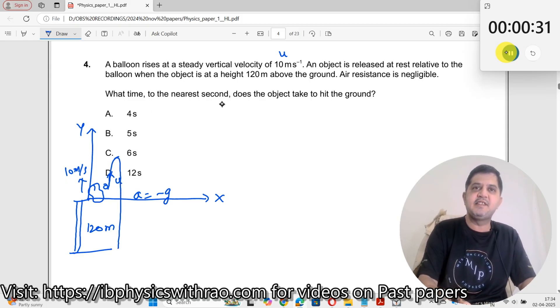What time, to the nearest second, does the object take to hit the ground? You need to find out what is the total time of flight. So how do we do? Use the expression s equals ut plus half at squared.